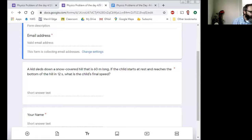So a kid sleds down a snow-covered hill that's 60 meters long. If the child starts at rest and reaches the bottom of the hill in 12 seconds, what's the child's final speed?